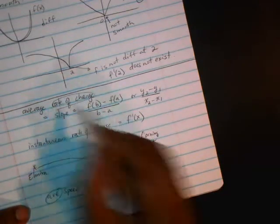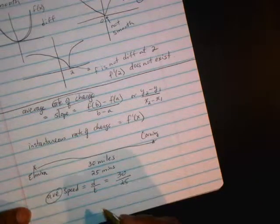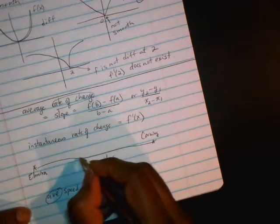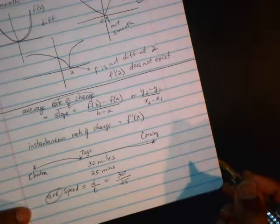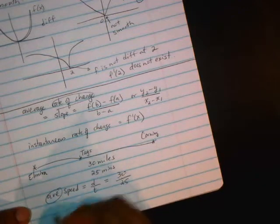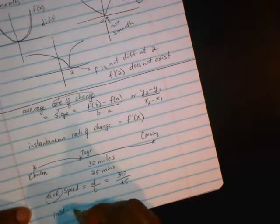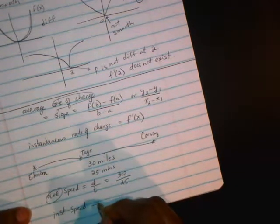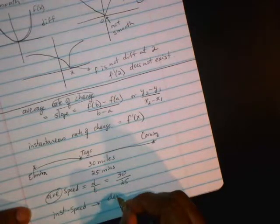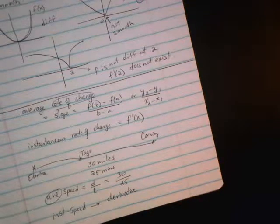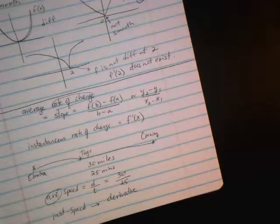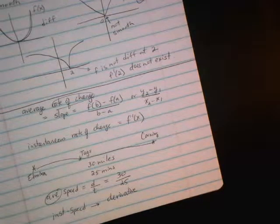But if I want to know what your instantaneous speed is right when you were driving by Tags on Route 352, what was your speed limit? And that would be the instantaneous speed. And to get that, you would use the derivative. That's the meaning of the derivative. It gives you the instantaneous rate of change, the slope of the curve at a certain point.